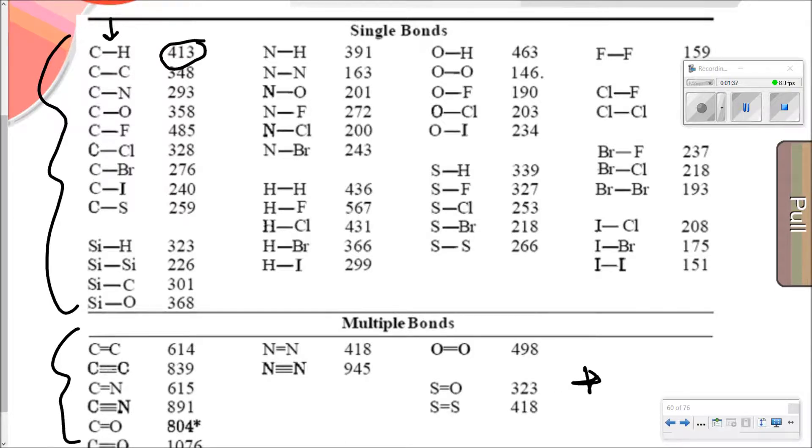And the same thing is true for the multiple bonds down here at the bottom. If you've got a double bond carbon bond, it's 614. Triple bond is 839. And if you notice up here, a single bond for carbon to carbon is 348. You can see the trend, which we've talked about with bonding in the past. If you have double and triple bonds, they are going to be stronger, have more energy.